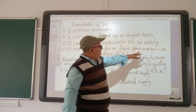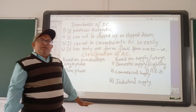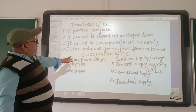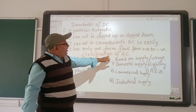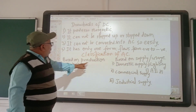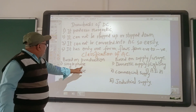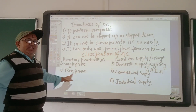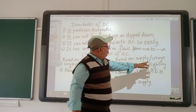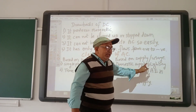DC flows from positive to negative, and the voltage may be 12, 120, or 1200 volts. Based on phase, AC is classified into single phase and three phase. AC is also classified by its supply type into domestic supply.